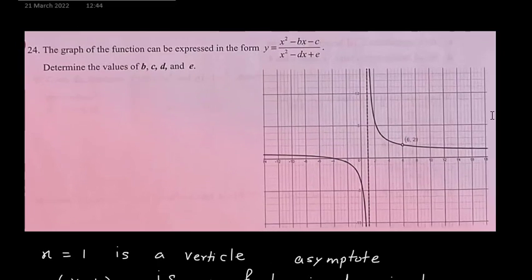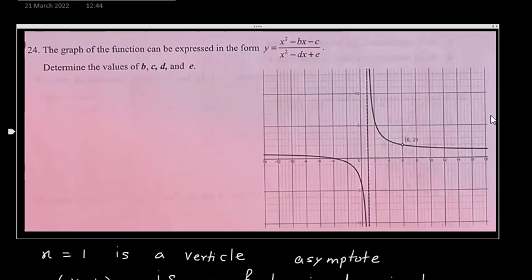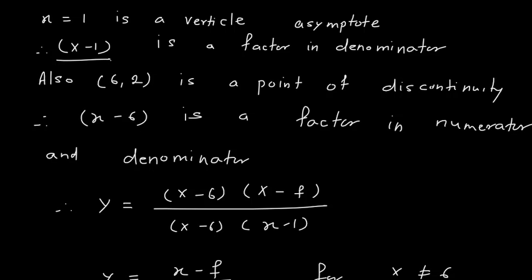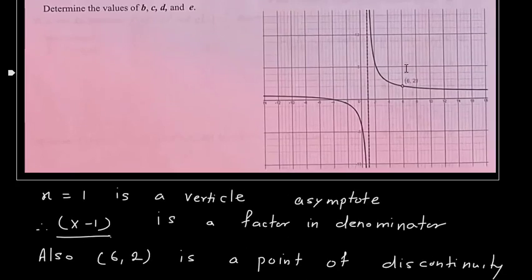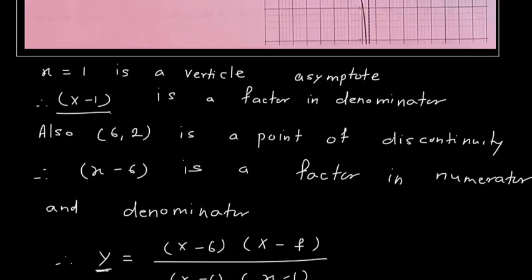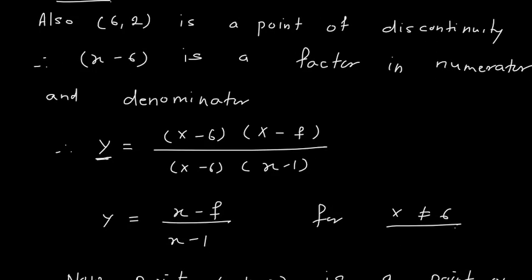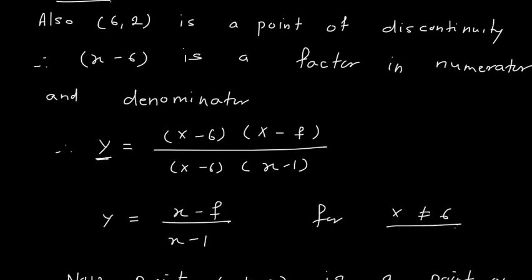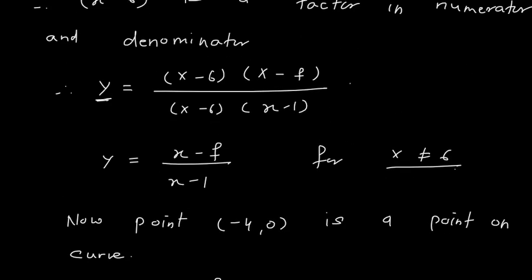Next, I can identify a point of discontinuity at (6, 2). Since (6, 2) is a point of discontinuity, (x-6) is going to be a factor in both the numerator and denominator. So I express y as (x-6)(x-f) divided by (x-1)(x-6). I use f for the unknown factor because this is a quadratic function and I don't know the other factor yet.